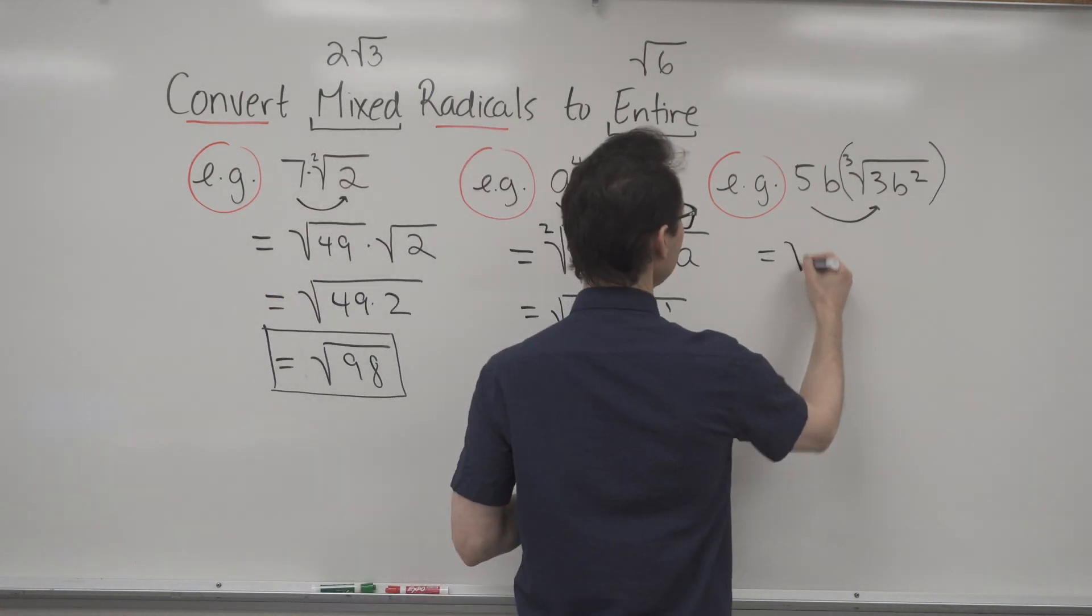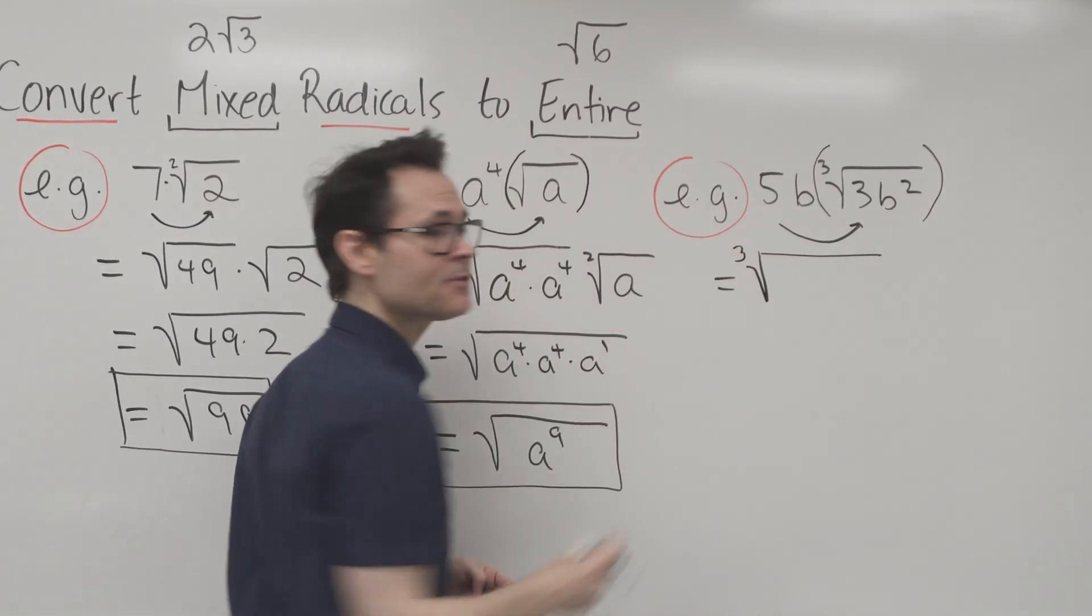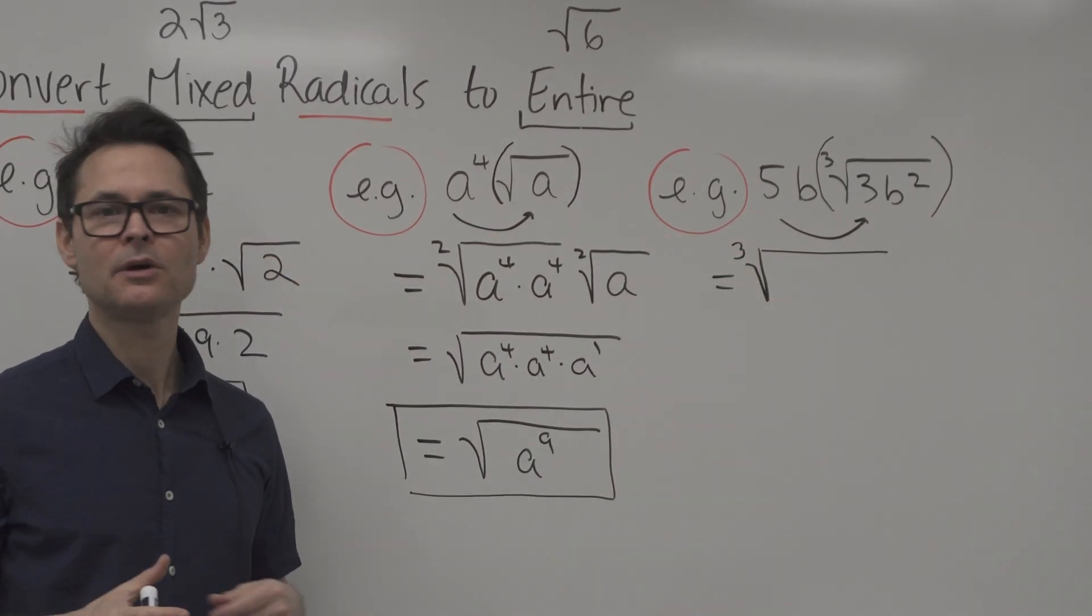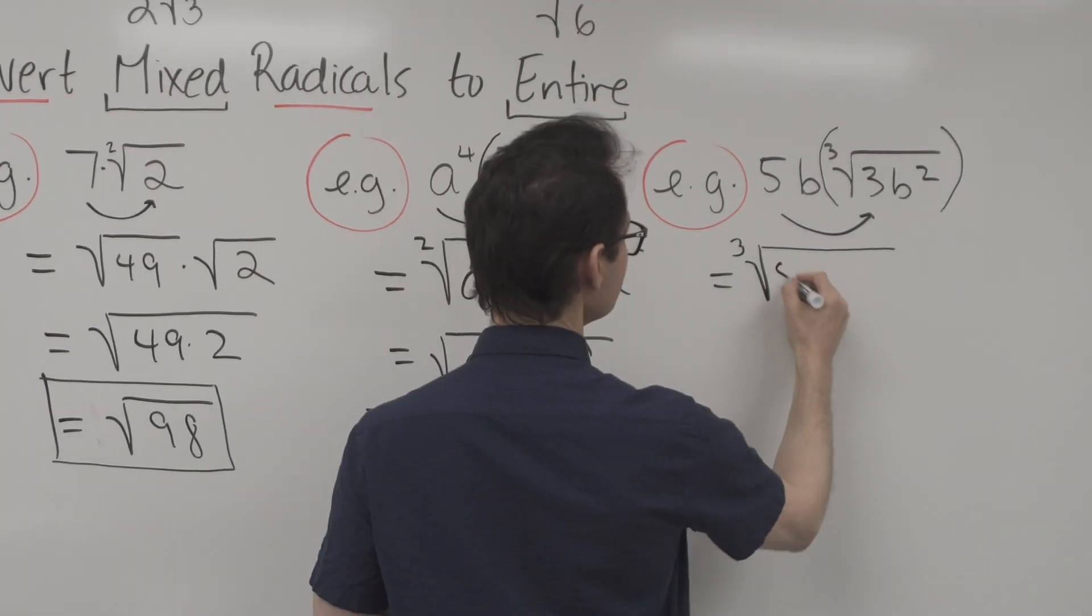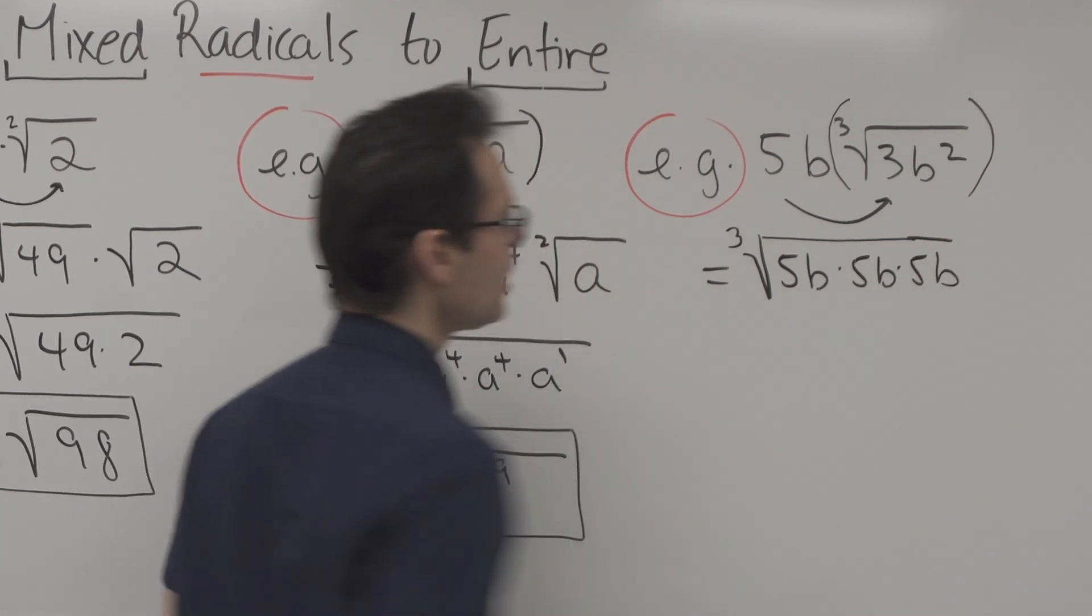So I'm going to write 5B. Notice it's cube roots. So I have to write the 3 there. If it's a square root, you don't have to write it. Cube roots, you have to. So it's going to be 5B times 5B times 5B.